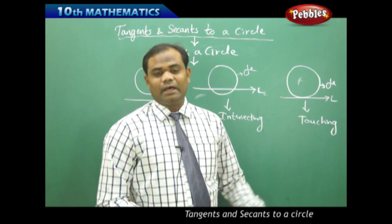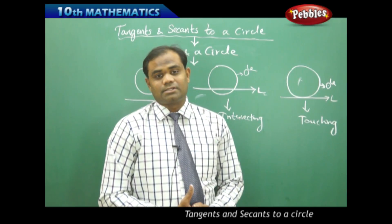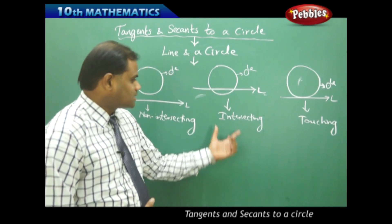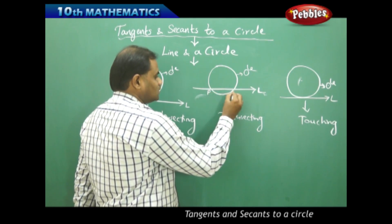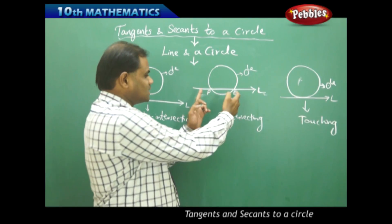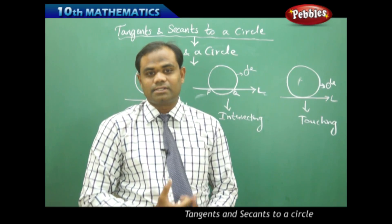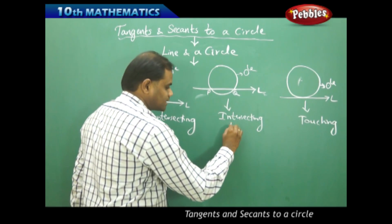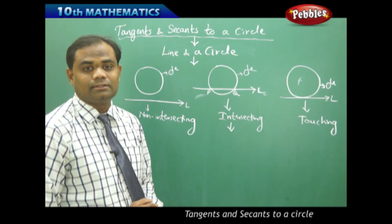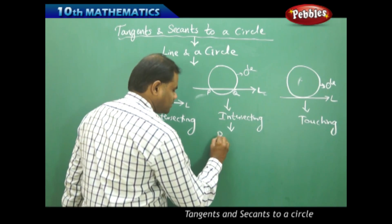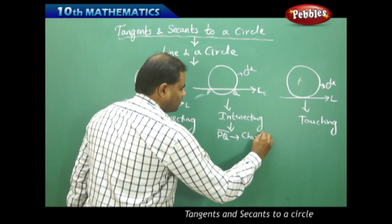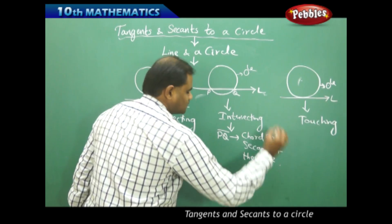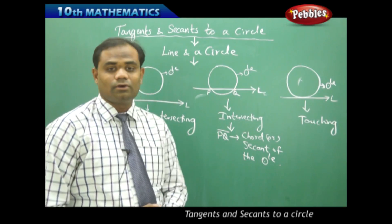In the intersecting and touching cases we have many mathematical properties to study as a geometrical understanding of the line and circle. For the intersecting case, if I have two points P and Q where the circle is intersected, then the line segment PQ is called the chord or secant of the circle.